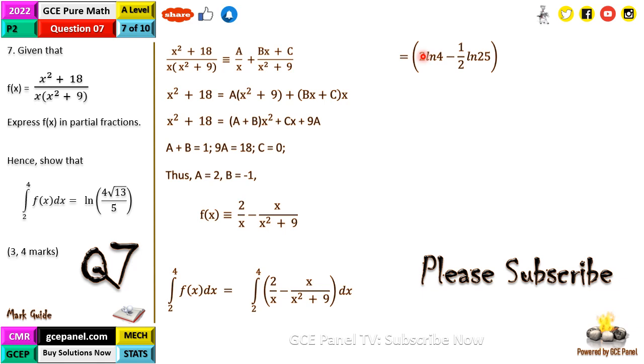So we are going to have 2 ln x minus the integral. When we differentiate this one, we are going to have 2, so we are going to bring out 2, work it out, then factorize and continue. When we consider this integral, we are now going to have 2 ln 4 minus a half ln 25 for the first part, and the second one we are going to have 2 ln 2 minus a half ln 13 from 2 to 4.